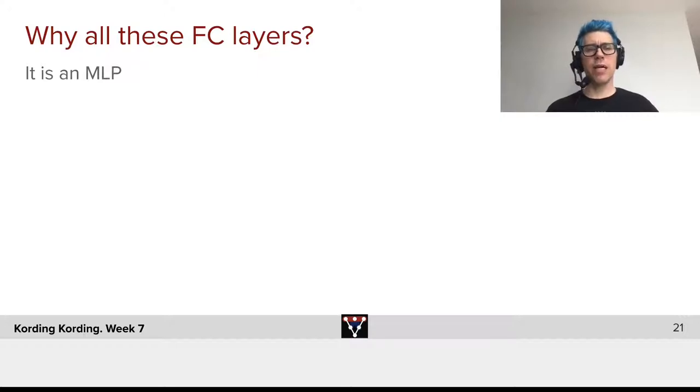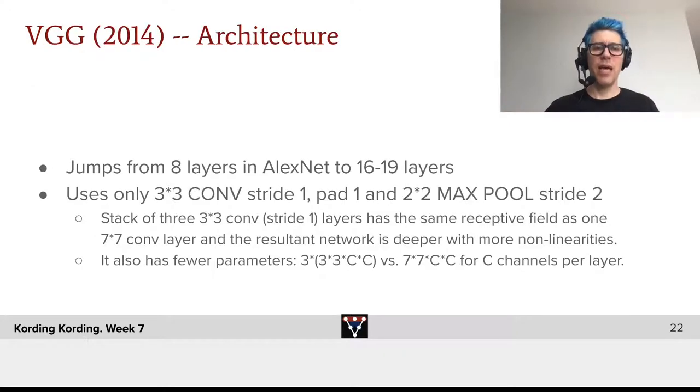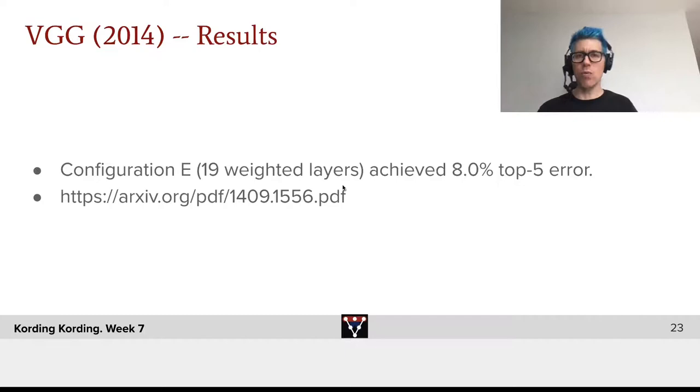Why all the fully connected layers? They're an MLP, basically able to do interesting non-linear calculations. The architecture jumps from the eight layers of AlexNet to 16 to 19 layers. It uses only 3x3 convolutions with stride 1, padding 1, and only 2x2 max pool stride 2. It has fewer parameters at certain places. Instead of going from a large 11x11 filter which takes 121 parameters, it has just 3x3, which gives us nine locally. Having fewer parameters often makes performance better because fewer parameters means better generalization performance. But it's still an incredibly big network with a lot of parameters.